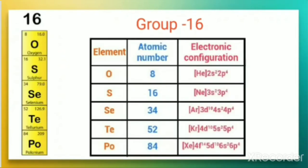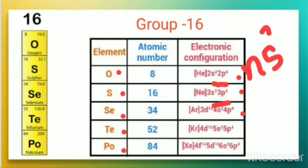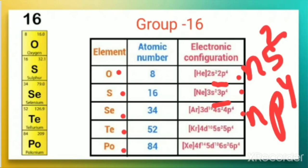Group 16 elements — oxygen, sulfur, selenium, tellurium, polonium — show a similar pattern. Oxygen has 2s², 2p⁴; sulfur has 3s², 3p⁴; selenium has 4s², 4p⁴, and so on. The general electronic configuration for group 16 is ns², np⁴.